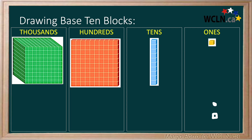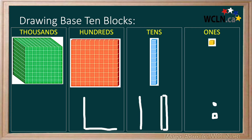To draw 10s, you can draw a line about as long as 10 of your 1s dots crammed together, or a tall and narrow rectangle. Try both. The 100s block is square like the 1s block, but much larger. Each side of the square is about as long as your 10s line or rectangle. To draw a 100s block, draw a square like this.